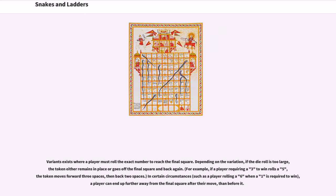Variants exist where a player must roll the exact number to reach the final square. Depending on the variation, if the die roll is too large, the token either remains in place or goes past the final square and back again. In certain circumstances, a player can end up further away from the final square after their move than before it.